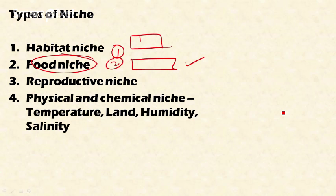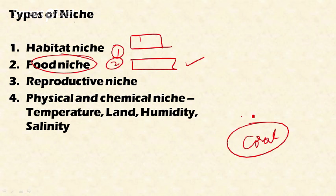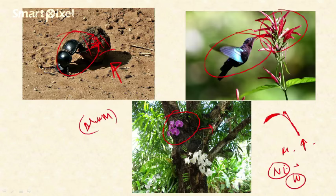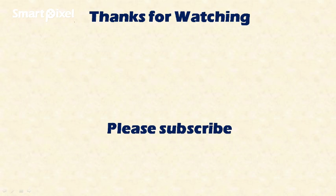Another example of physical and chemical niche is coral reefs. Coral reefs need certain requirements to survive — for example, they need shallow tropical areas where seawater is clean and warm. This is the physical requirement and one of the niches for coral reefs. I hope you understood this concept. Thanks for watching, please subscribe.